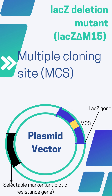If we are inserting a foreign DNA into this multiple cloning site, then alpha complementation cannot occur — that is, we have disrupted the lacZ gene. Without alpha complementation, we cannot get a functional enzyme.